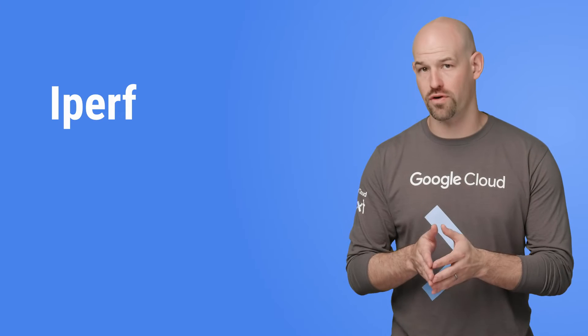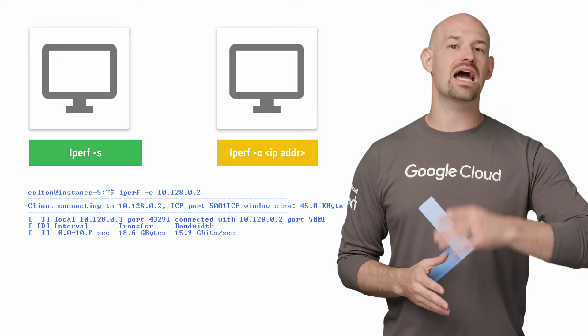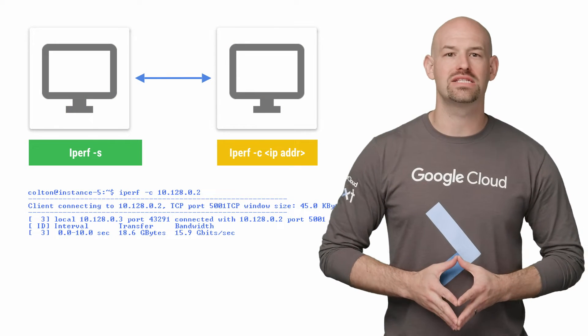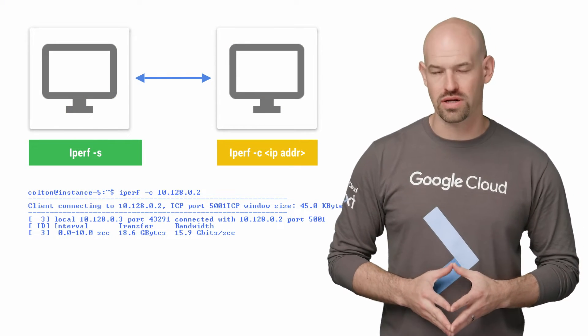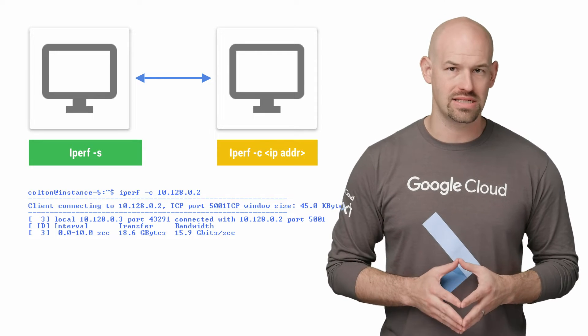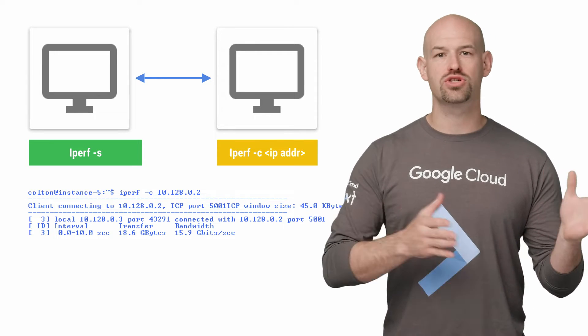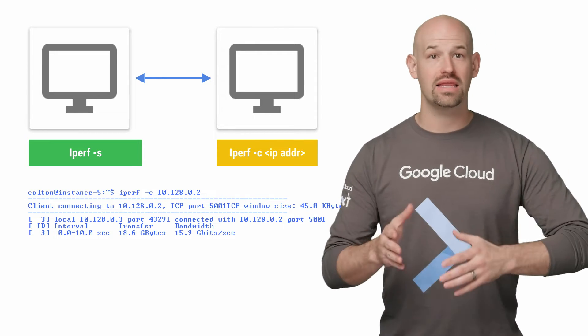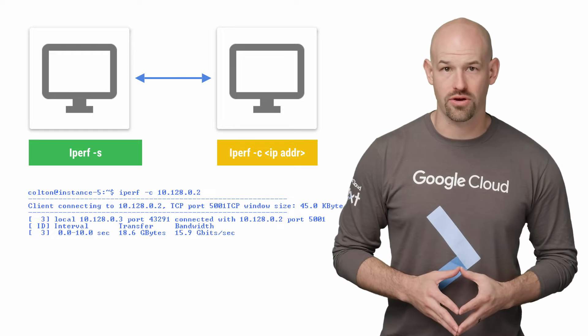iPerf is a TCP and UDP benchmark and has several advantages over NetPerf, like bandwidth shaping and threaded support so that multiple streams can be created. Getting iPerf working is somewhat straightforward — simply install iPerf on each of your target instances and run the server on one and the client on the other.